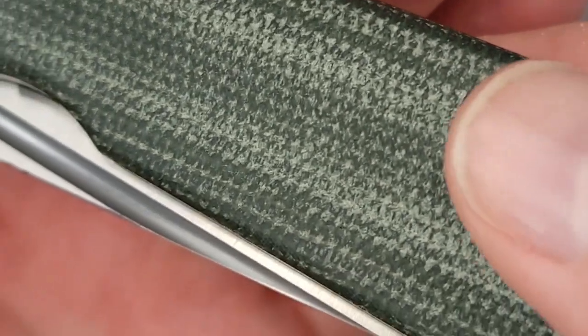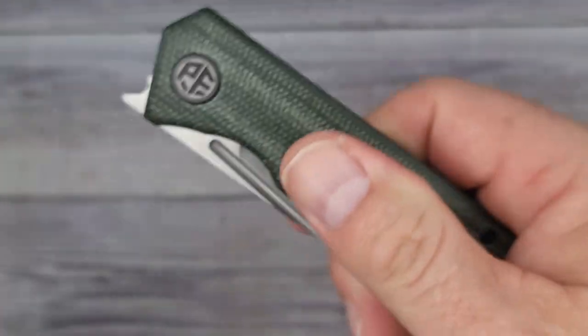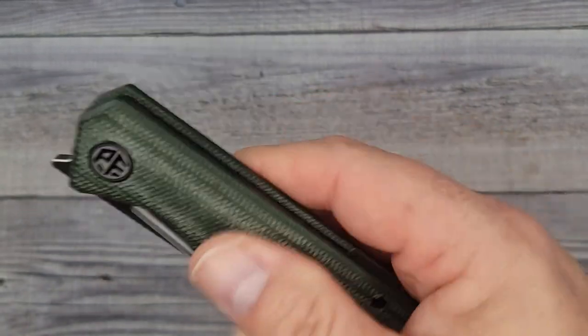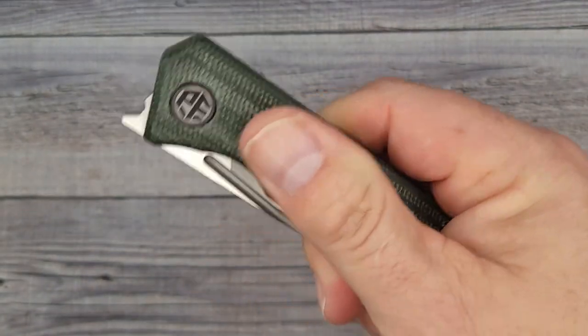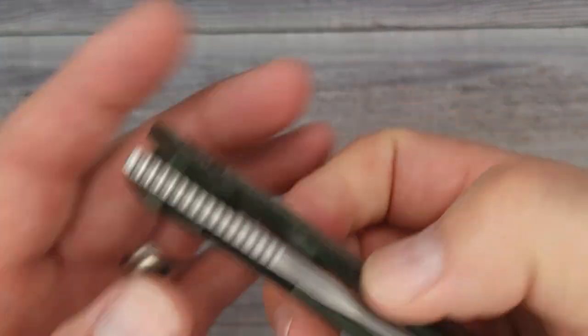Right out of the box we have to check out this micarta. A little bit of texture vision for you. It feels so nice. As far as micarta goes this is like a six, whereas seven would be perfect. It has that nice rough feeling, not slick, and gives me some texture. I'm liking that.